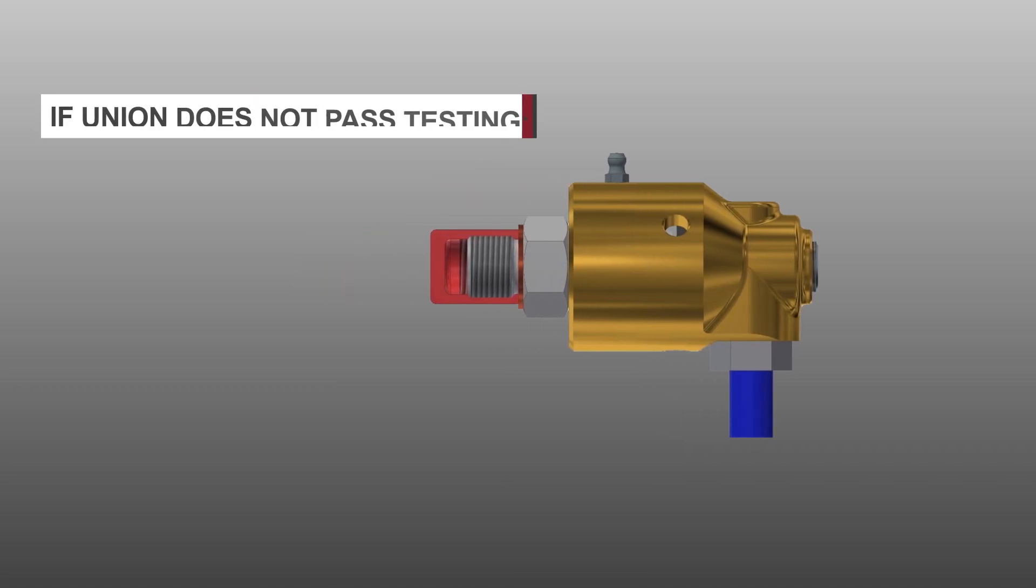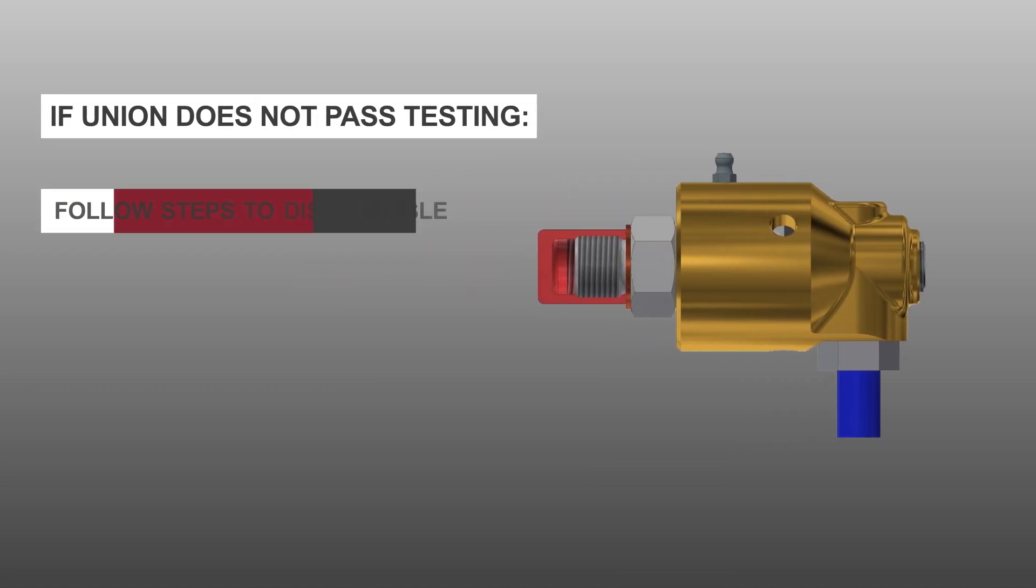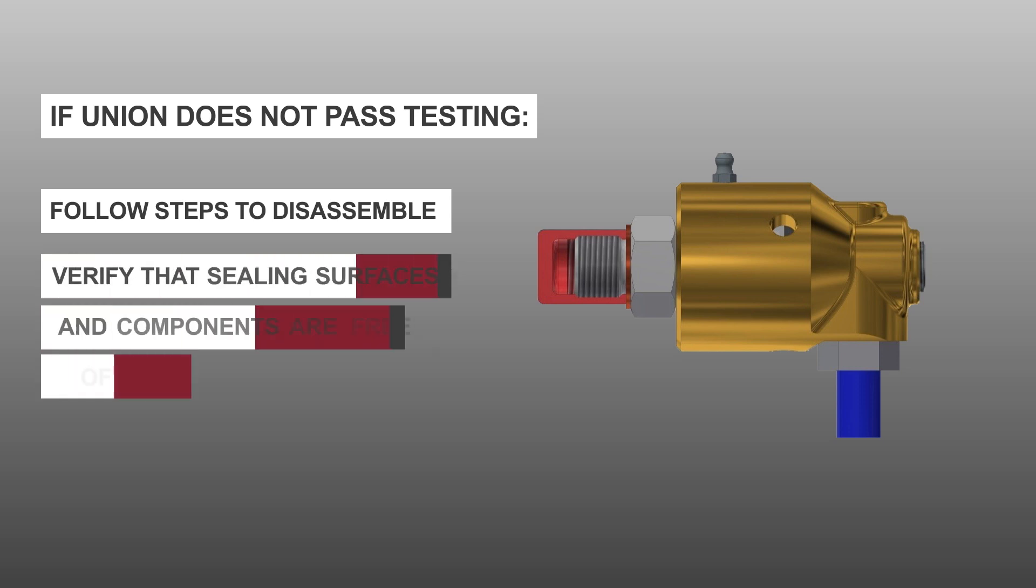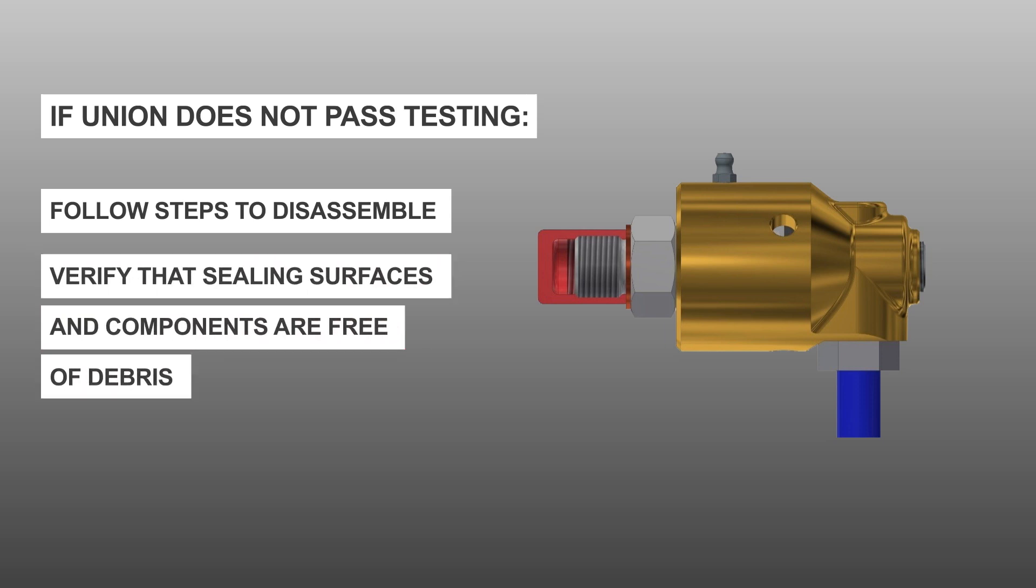In the instance where the union does not pass testing, follow steps to disassemble, verify that sealing surfaces and components are free of debris, and reassemble and repeat test.